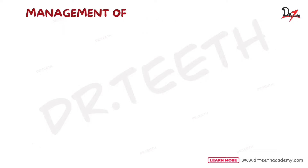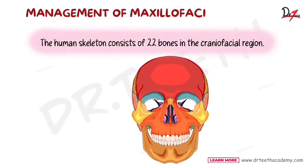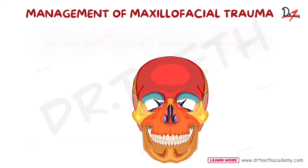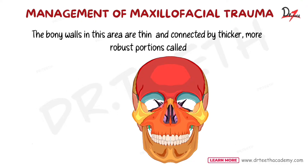The human skeleton consists of 22 bones in the craniofacial region. If you look at the skull right here, the bony walls in this area are thin and they are connected by thicker, more robust portions, and these are called buttresses.